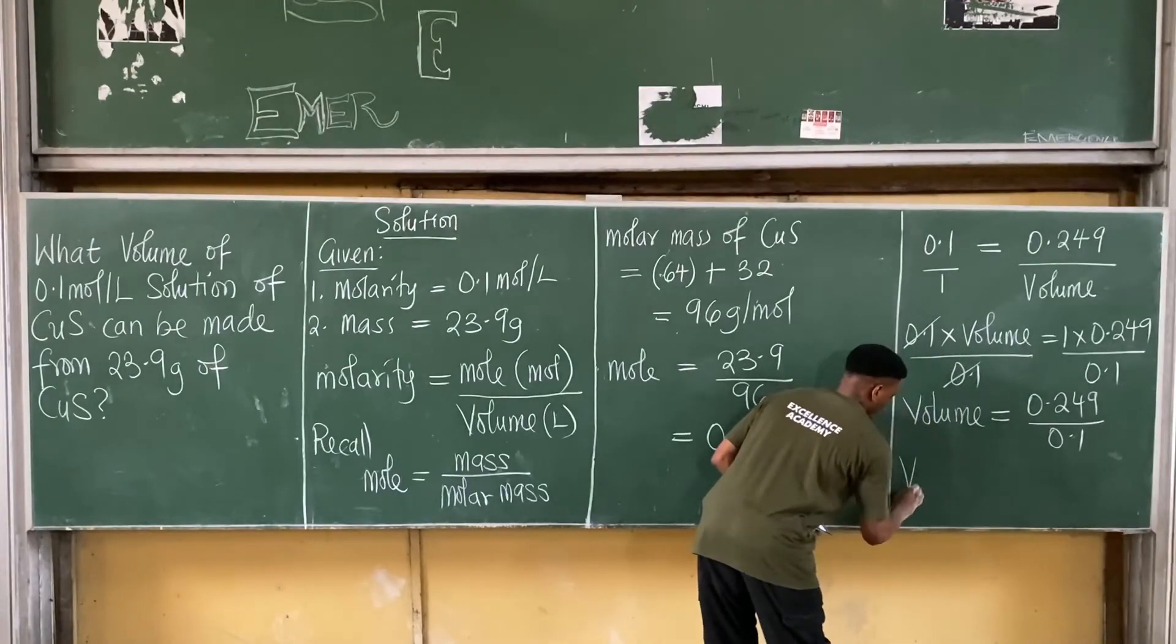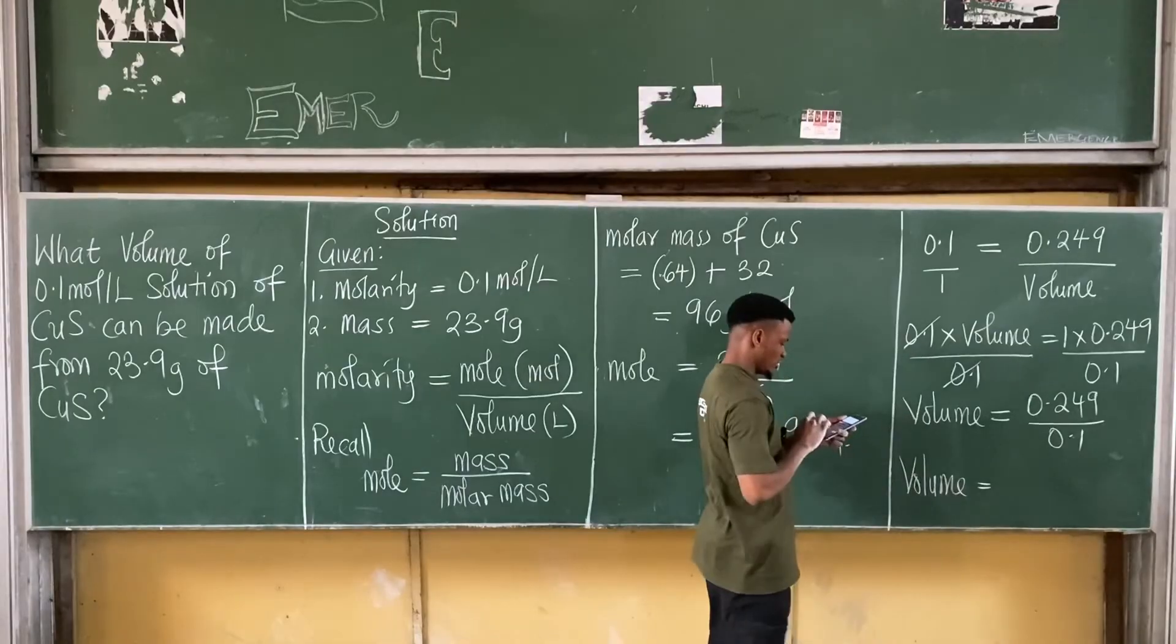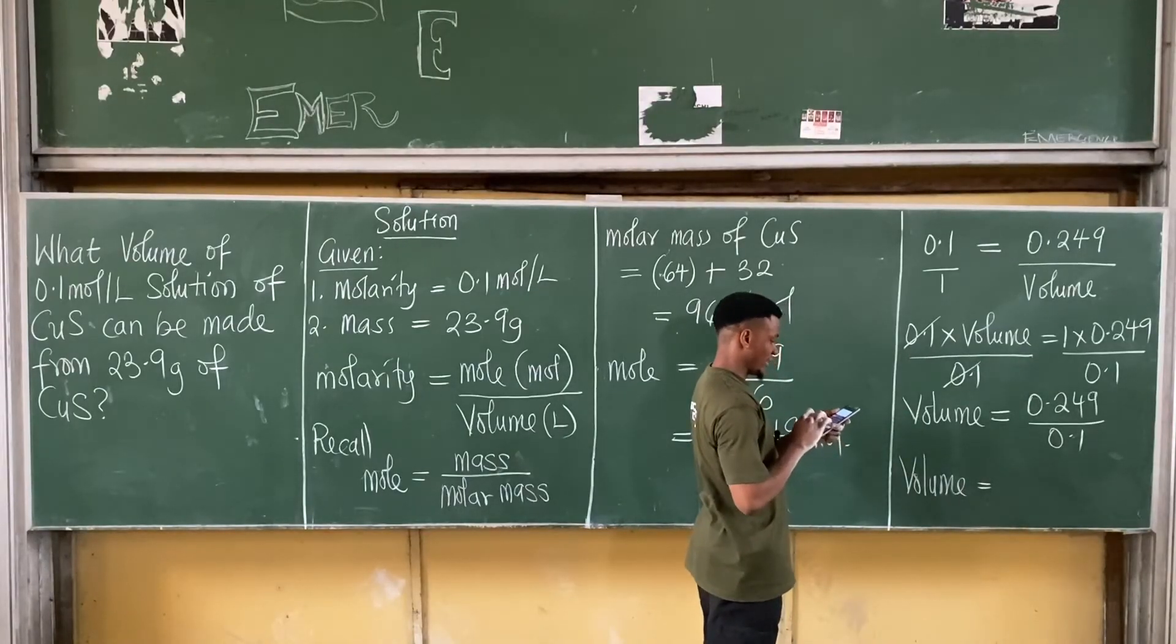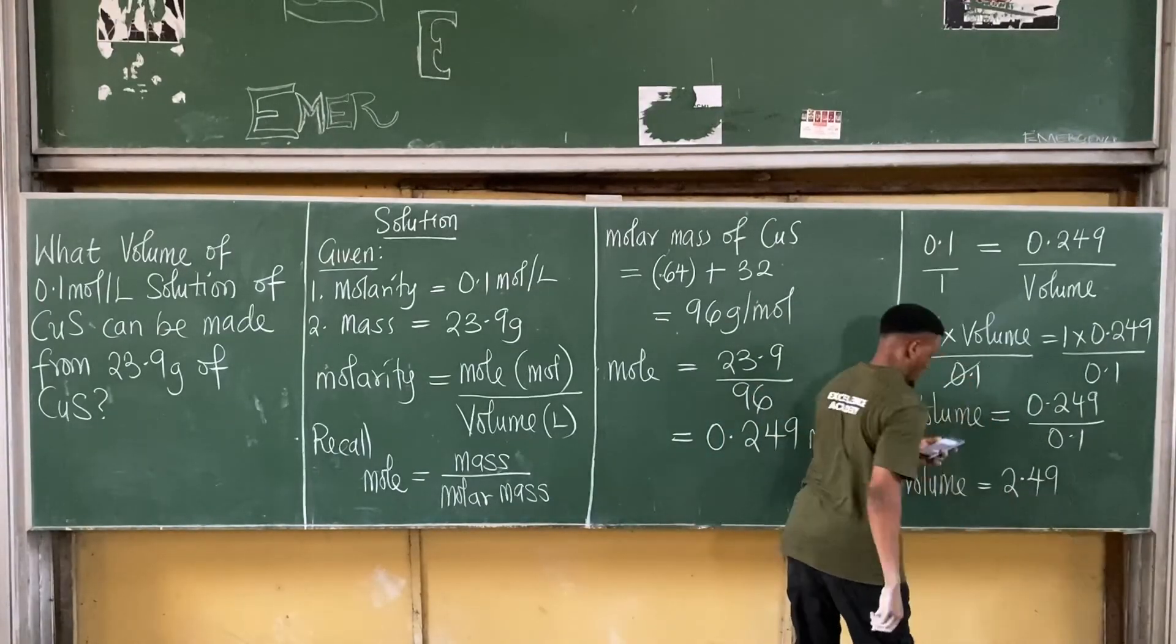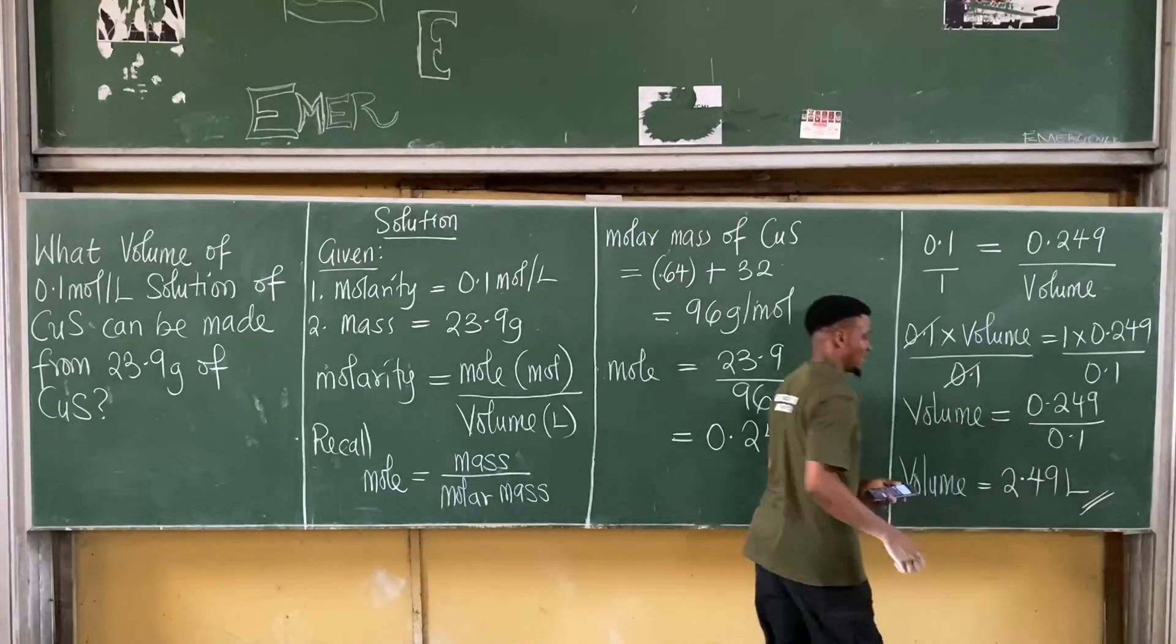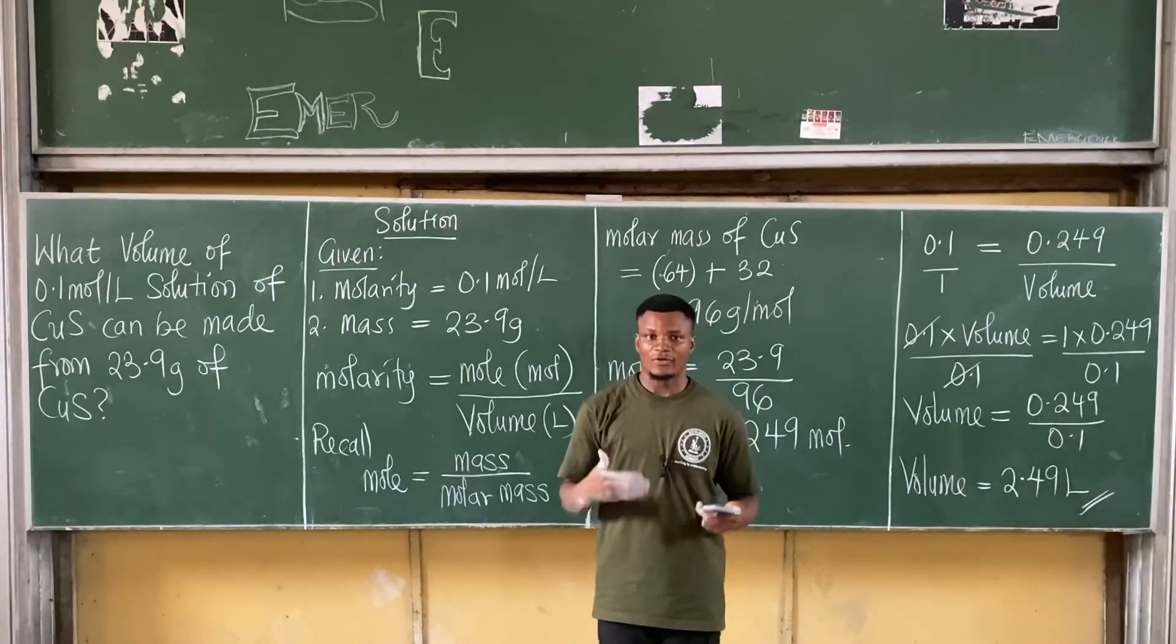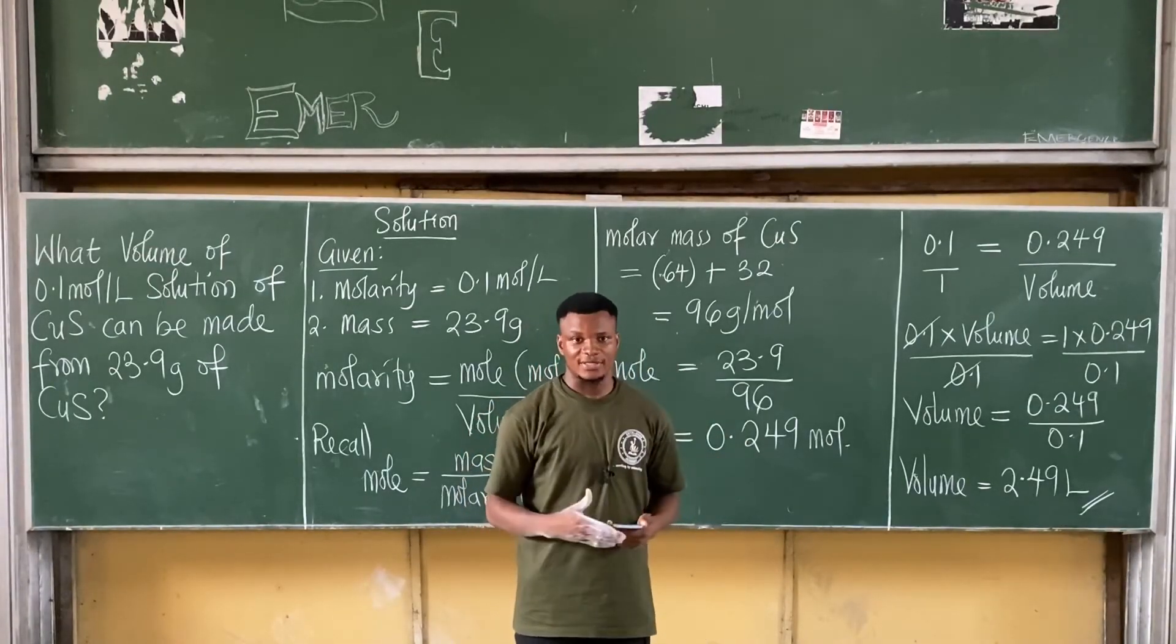So I have that volume is equal to 1 times 0.249 gives you 0.249 all over 0.1. That means the volume is equal to 0.249 divided by 0.1. That gives you 2.49. The volume is measured in liters. So the answer is 2.49 liters. This is how we solve this question.